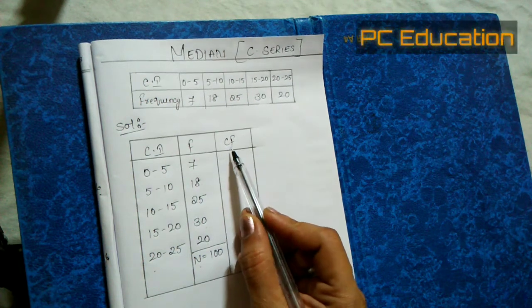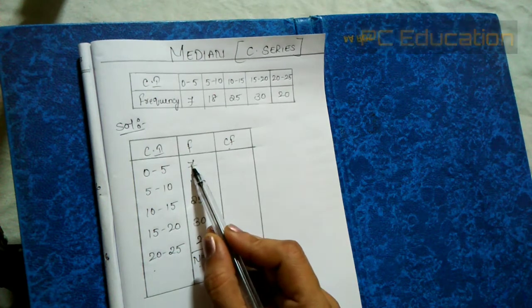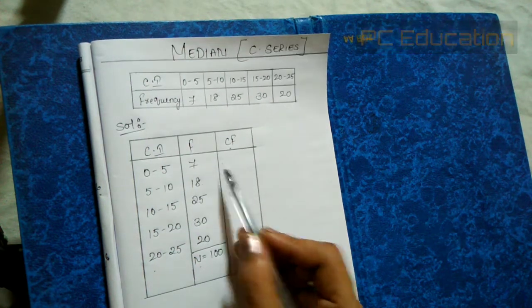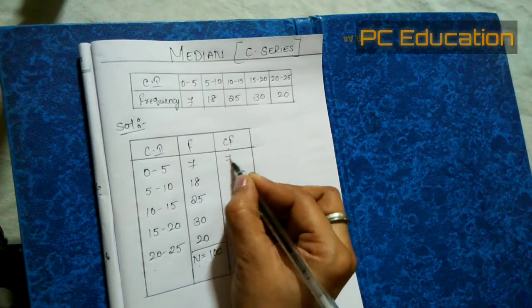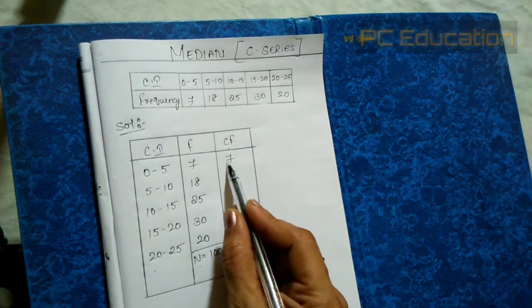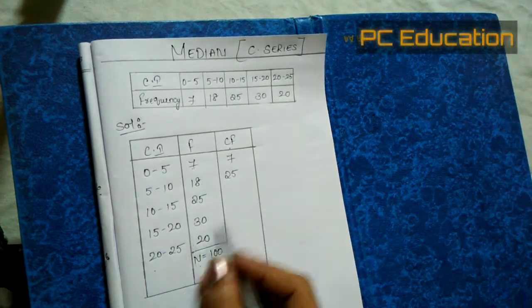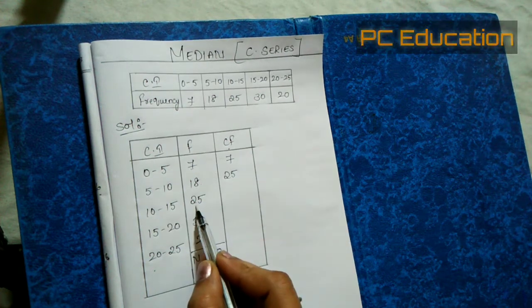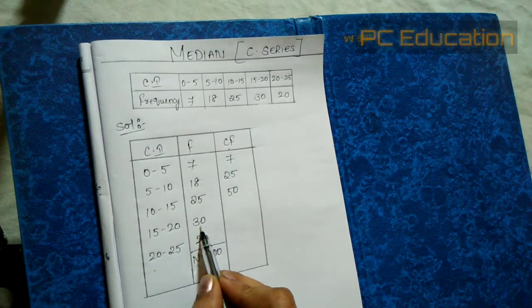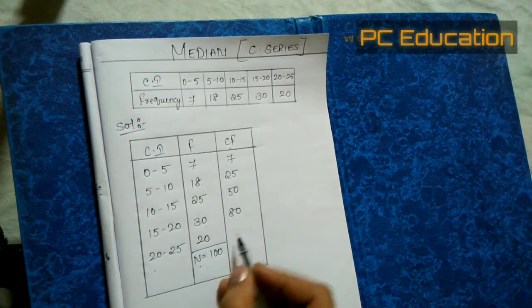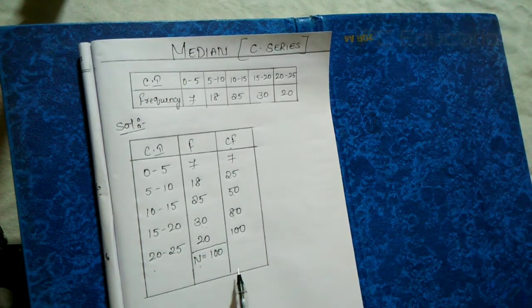The next column to find is CF, which is cumulative frequency. We get it by adding the frequencies progressively. The first value is 7. Then 7 + 18 = 25, then 25 + 25 = 50, then 50 + 30 = 80, and 80 + 20 = 100.